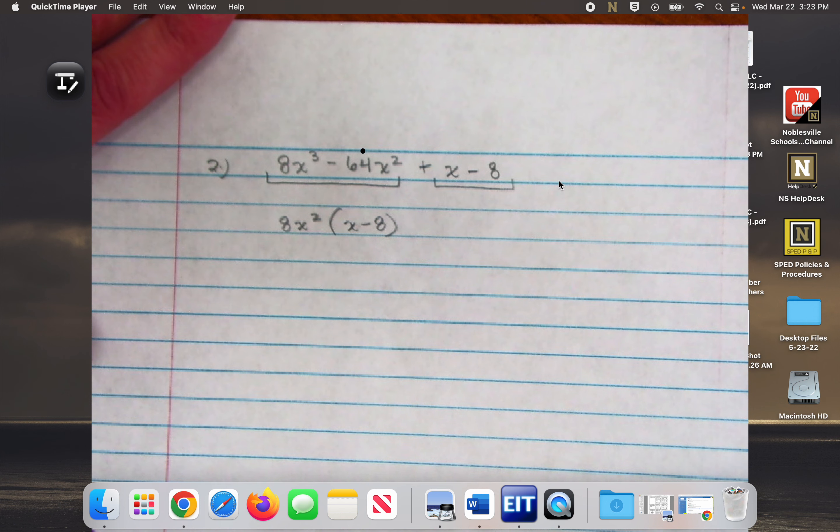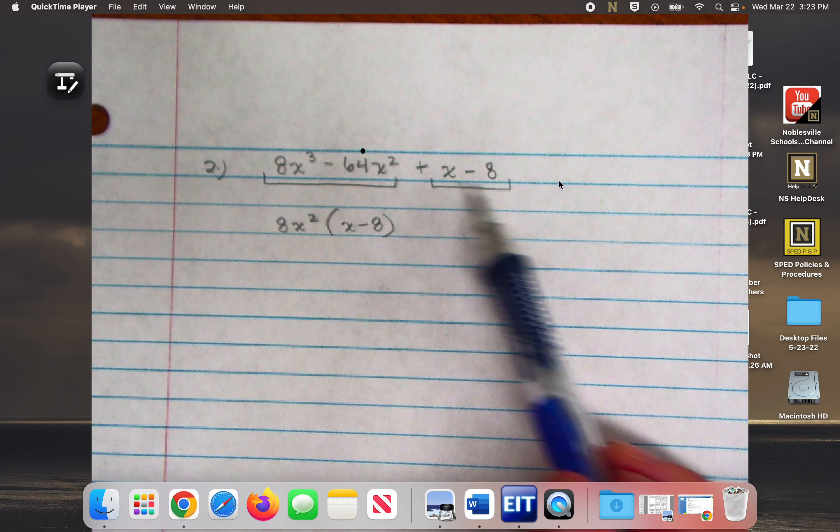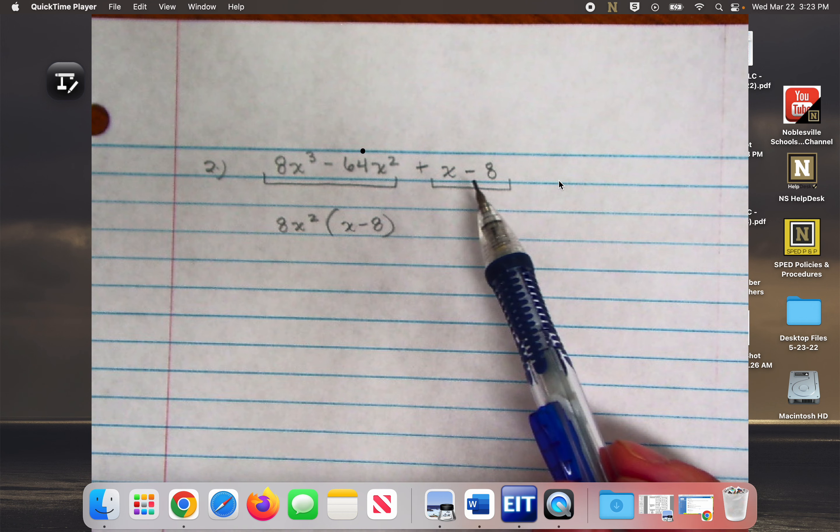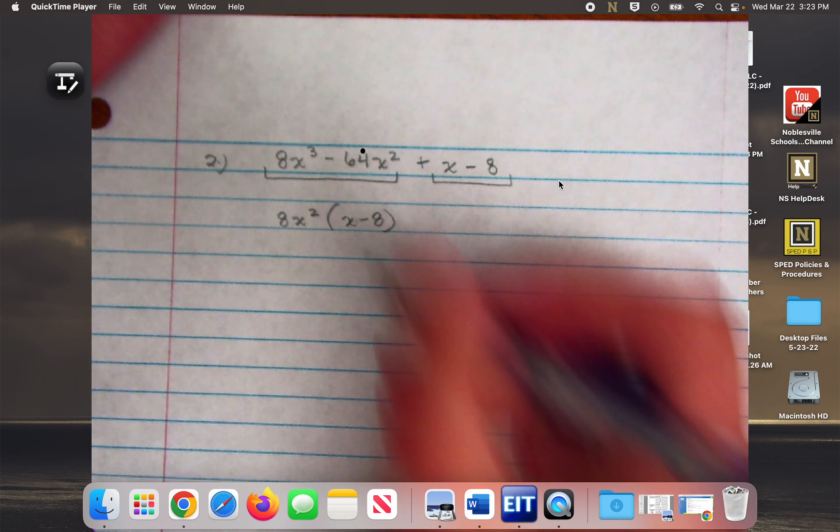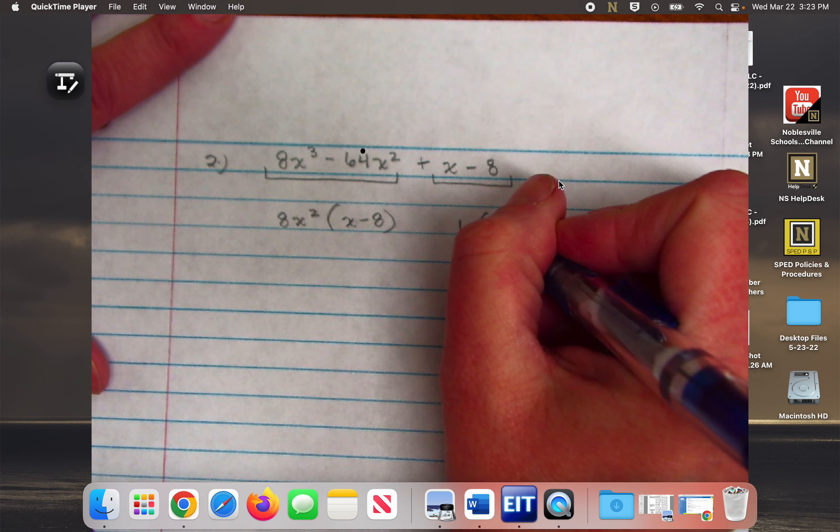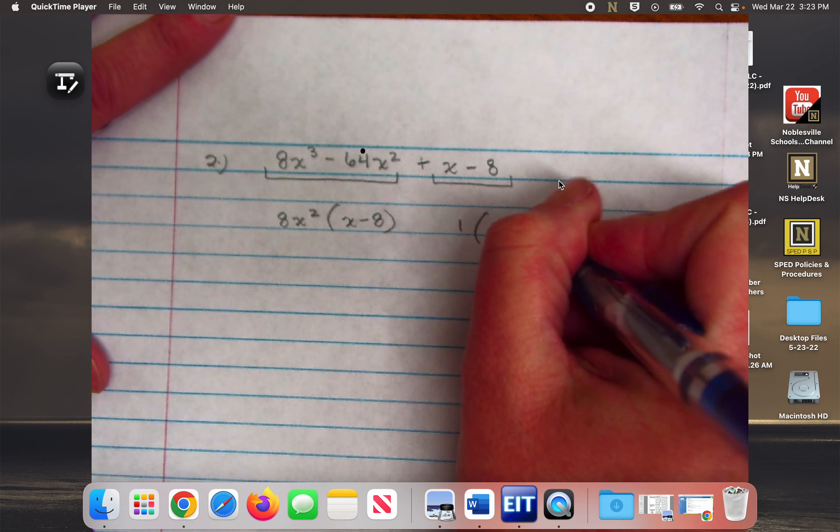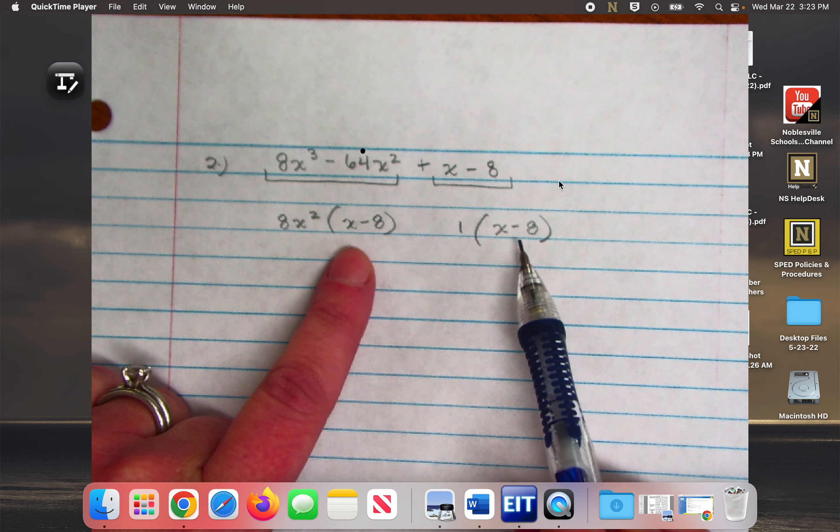If there's not a coefficient or an obvious common factor, you still have to take something out to complete the first quantity. So we're going to take a positive 1 and then it's just going to be x minus 8, because these still have to match.